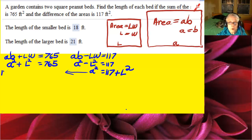I'm going to take that over to the sum formula and say that since A squared equals 117 plus L squared, we'll have 117 plus L squared plus L squared equals 765. So 2L squared equals 765 minus 117.